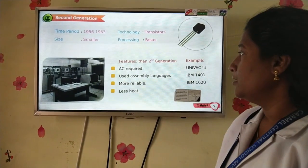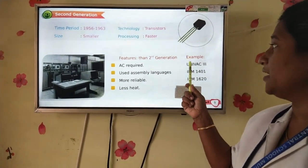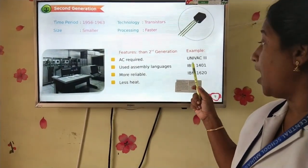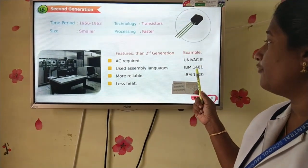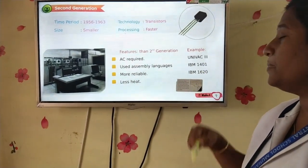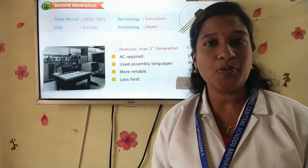The examples of second generation computers are UNIVAC 3, IBM 1401, and IBM 1620.